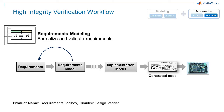Text-based requirements can be ambiguous and are often difficult to validate as the requirement set grows. You can instead model your requirements in a requirements model. Requirements Toolbox includes a requirements table feature to let you formalize requirements and automatically check for completeness and consistency, as well as automatically generate tests using Simulink Design Verifier.